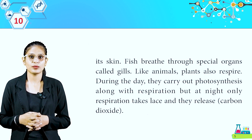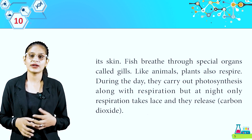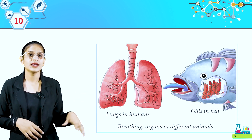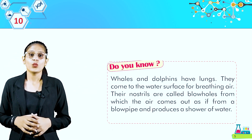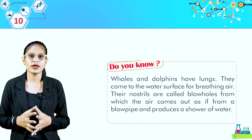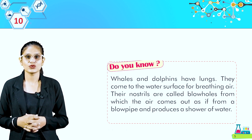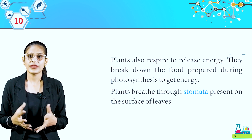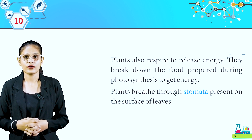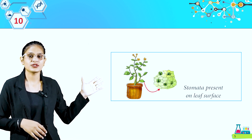But at night, only respiration takes place and plants release carbon dioxide. Look at this picture: breathing organs of different animals — lungs in humans, gills in fish. Do you know? Whales and dolphins have lungs; they come to the water surface for breathing. Their nostrils are called blowholes, from which air comes out like a blowpipe and produces a shower of water. Plants also respire to release energy. They break down the food prepared during photosynthesis to get energy. Plants breathe through stomata present on the surface of leaves. Look at this picture: stomata present on leaf surface.